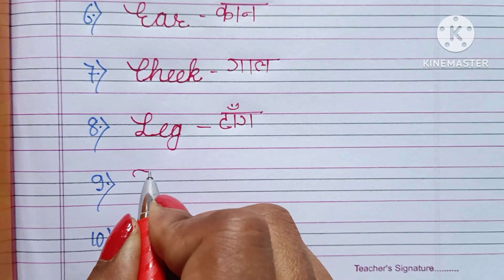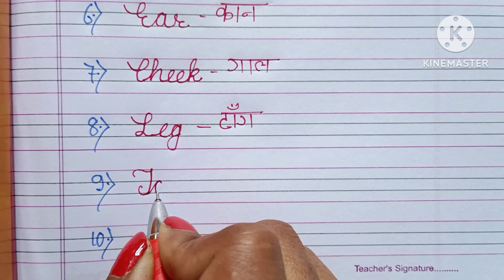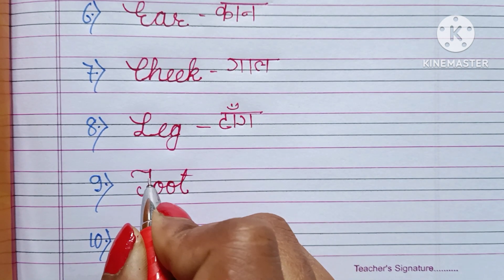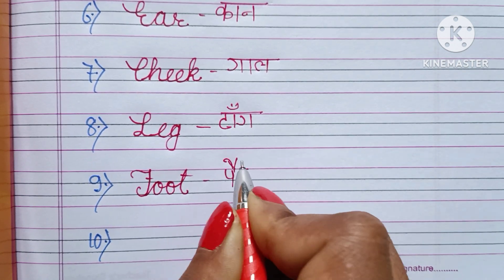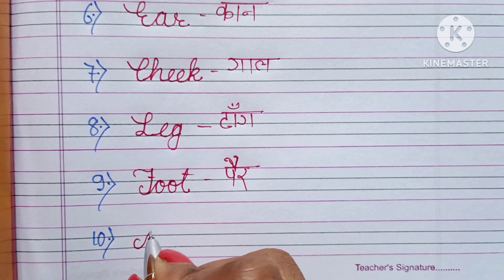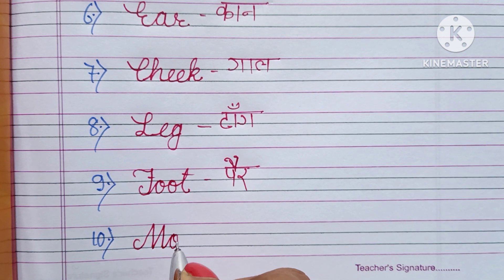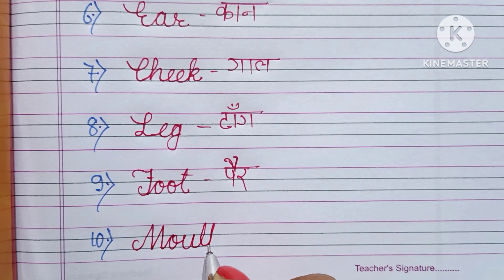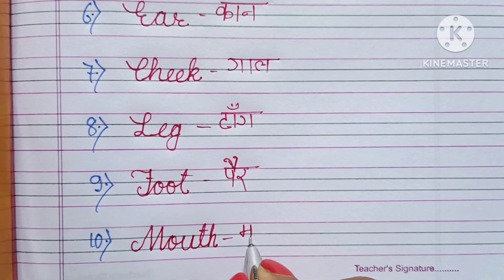Foot. F O O T - Foot. Foot means Pair. Mouth. M O U T H - Mouth. Mouth means Mugh.